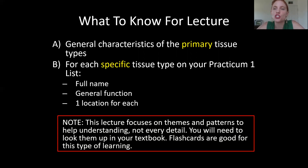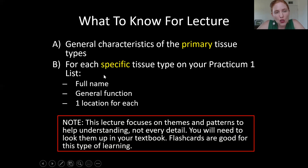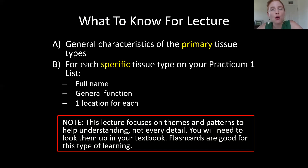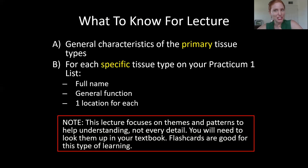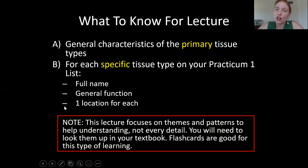For the four primary tissue types, you need to know their general characteristics — if I describe a tissue, you should be able to characterize it. For each specific tissue type, and all specific tissue types you need to know are listed in your lab practicum one checklist, you'll need to know the full name, general functions, and location.